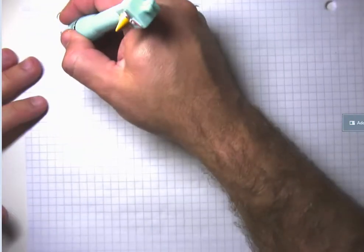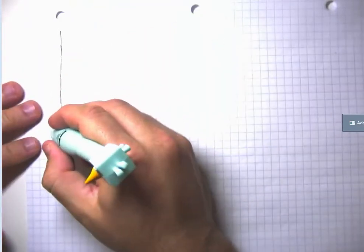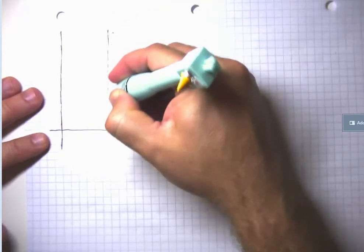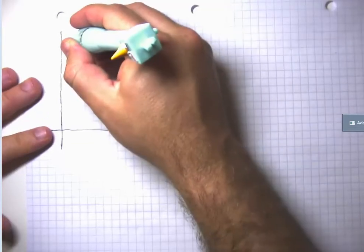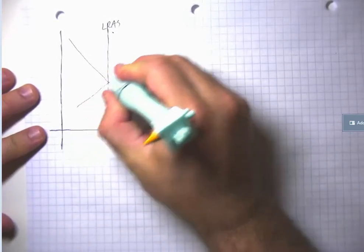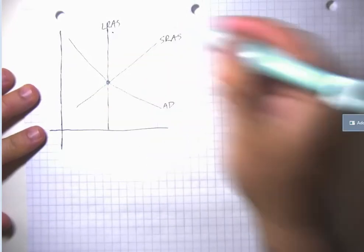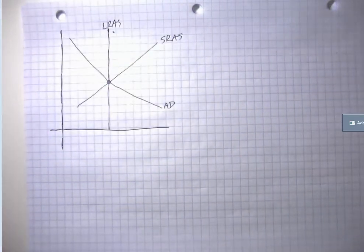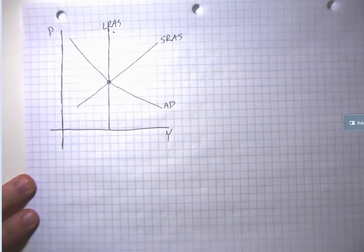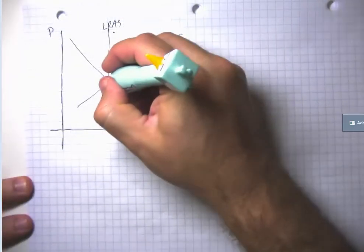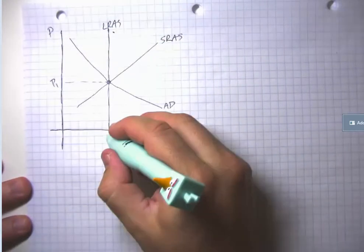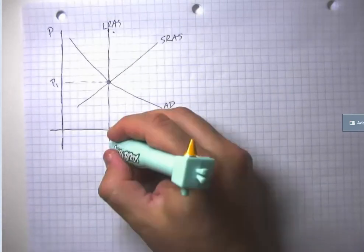Let me walk through an example. Let's suppose we have our economy in 2005 — the economy has recovered from the recession after the busting of the dot-com bubble. We are at our Goldilocks moment, neither in a recession nor a boom. I've drawn my axes, drawn my curves, and labeled them. My initial equilibrium has prices at P1, and GDP is equal to long-run aggregate supply at its natural rate.